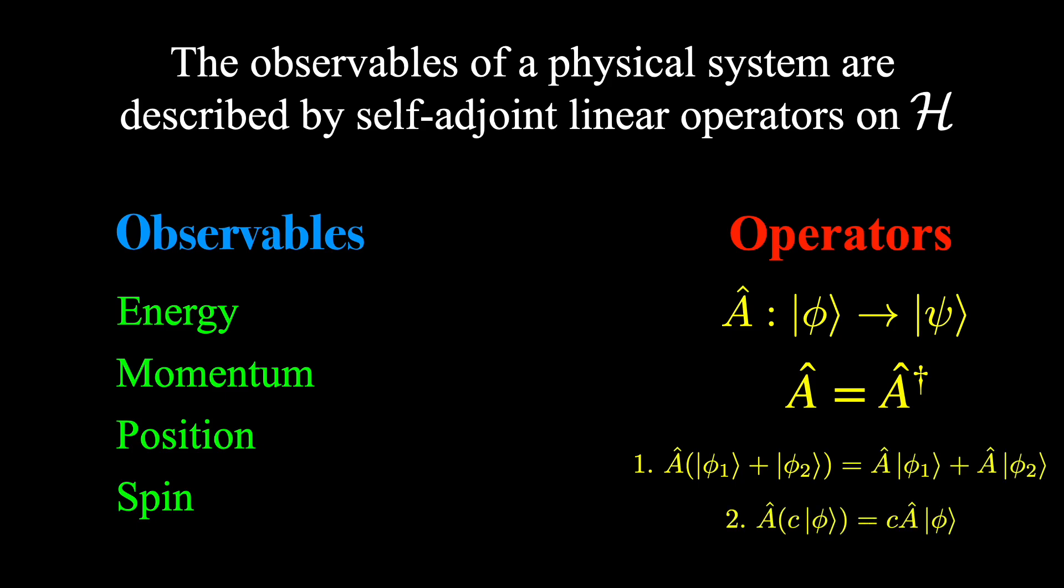This axiom therefore tells us that for whatever physical system we have, if we desire to measure an observable, then the way to describe this process of measuring it in quantum theory is to construct a unique self-adjoint linear operator for it. So each of these observables will have their own operators associated to them.